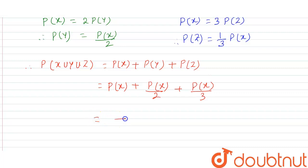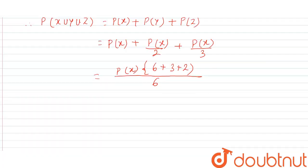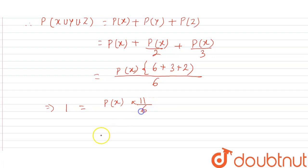We have to do the LCM, which is 6. Taking P(X) as common: P(X) times (1 plus 1/2 plus 1/3) equals 1. That gives P(X) times (6 plus 3 plus 2) divided by 6 equals 1, so P(X) times 11 by 6 equals 1.